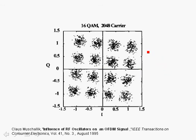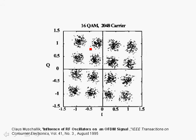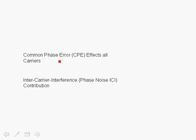The second observation is that each constellation point has a cloud, which is similar to additive white Gaussian noise. These noisy components around the constellation point are due to the phase noise of the oscillator. So the phase noise can be divided into two parts. One is what we refer to as a common phase error, which affects all the carriers in the same manner, corresponding to the fact that all the carriers have been shifted by the same phase.